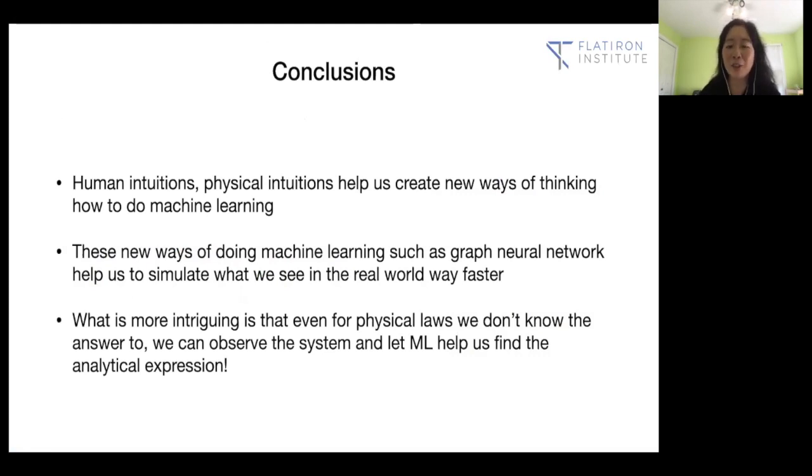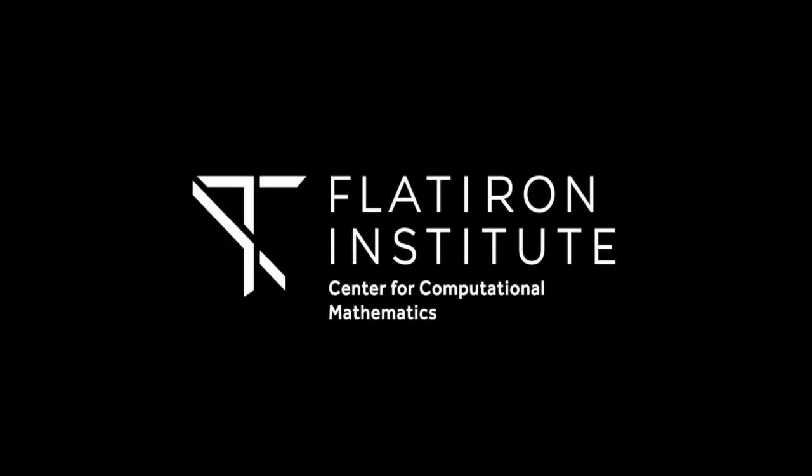And I'll just conclude quickly because it's supposed to be a short talk and have questions. Human intuitions and physical intuitions help us create new ways to think about how to do machine learning. I think these new ways of doing machine learning such as graphical neural net help us simulate what we can see in the real world way faster. There are definitely still a lot of drawbacks sometimes to use graphical neural net, but I think it's quite interesting where we are already. What is more intriguing is even for the physical laws we don't know the answer to or analytical equations we might not want to call them physical laws yet, we can observe the system and let these machine learning algorithms help us find analytical expression. So I'll pause here and take questions.